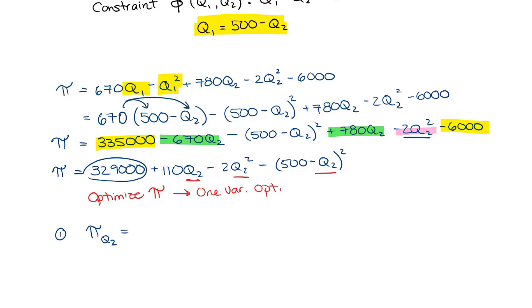I have my first term here, 329,000. The derivative is 0. I have the second term, 110Q2. The derivative of that will be 110. I have my third term, minus 2Q2 squared. So the derivative of that will be minus 4Q2. And then I have this last term. So I'm going to have to use the chain rule.